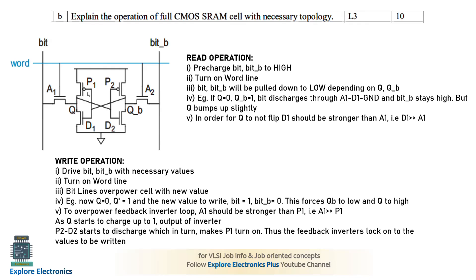With Q equal to 0, D1 is on because the inverter input is 1. A1 is on and D1 is on, so there is a discharge path from the bit line through A1 and D1 to ground. The bit line discharges its pre-charged value of 1 down to 0. Meanwhile, bit-bar remains at 1. This indicates we are reading the stored value 0.